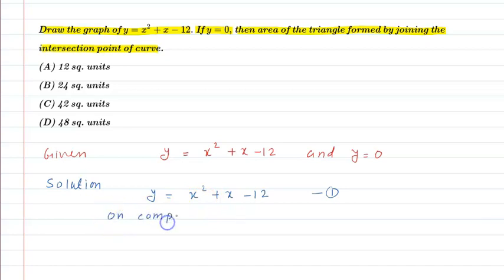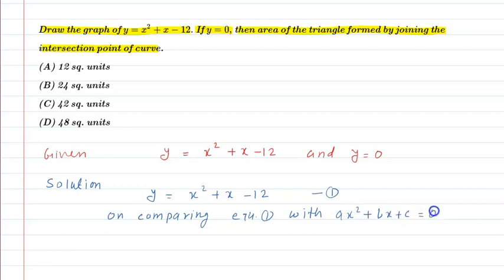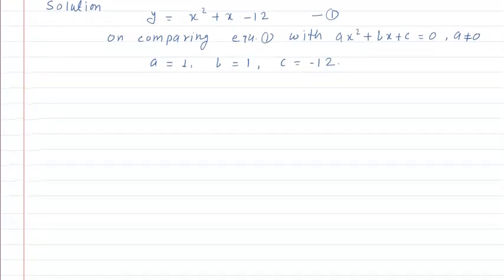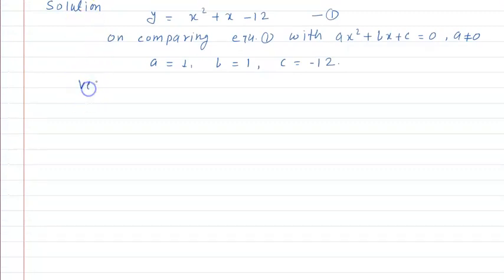On comparing equation 1 with ax square plus bx plus c is equal to 0, where a is not equal to 0. So, a ke place pe 1 aayega, b ke place pe 1, and c ke place pe minus 12. To actually the vertices of parabola hote hain minus b by 2a — yahan par vertex likh rahe hain.